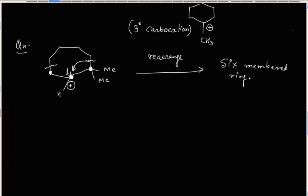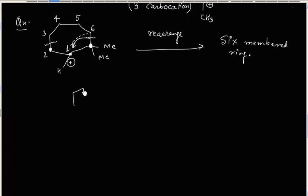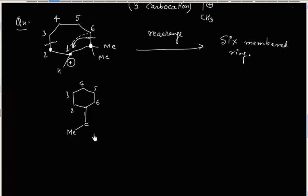Shifting this alkyl group connects this carbon and that carbon, giving a 6-membered ring numbered 2, 3, 4, 5, 6. Carbon number 1 will have two methyl groups attached and will carry the positive charge — so this is a 3° carbocation.